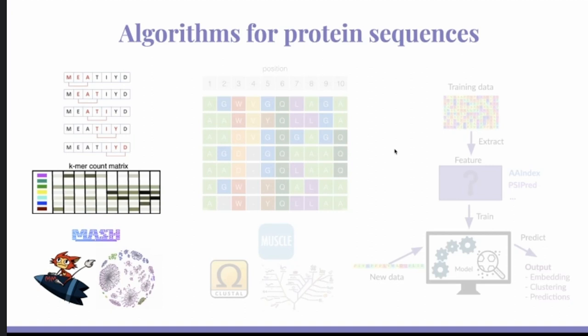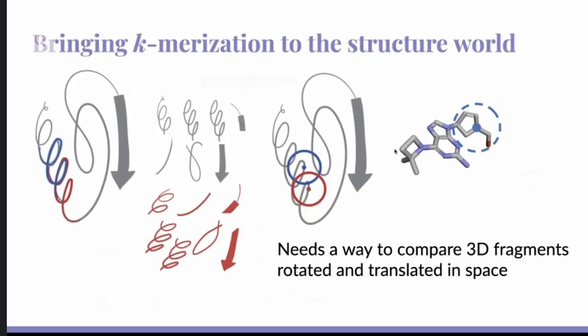So starting with k-mer counting, something for k-merization. So this works really well for sequences, of course, because there are 20 discrete amino acids or nucleotides or whatever, and you can really split your sequence and then count the number of different sub-sequences here. How would you do something like this for structures? So first of all, you can fragment your protein structure in a similar way.